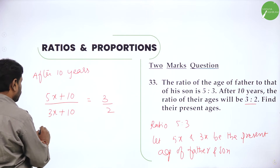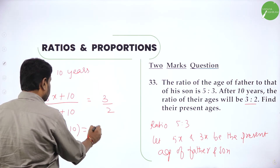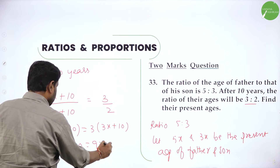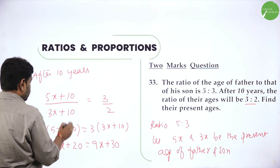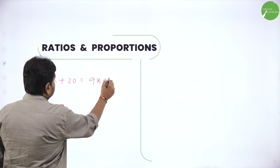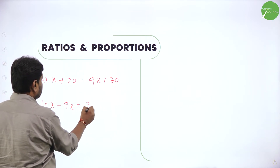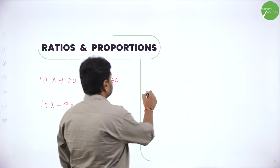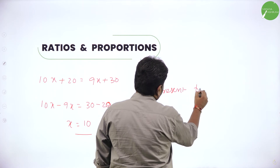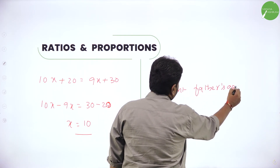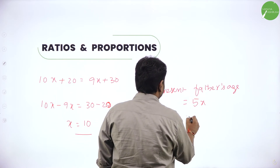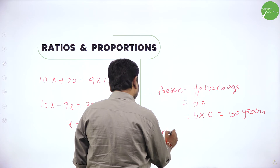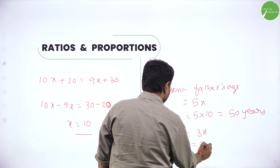So after 10 years, father's age becomes 5x plus 10 and son's age becomes 3x plus 10. Ratio means divided by — so after 10 years the ratio becomes 3 is to 2, meaning (5x+10)/(3x+10) = 3/2. Cross multiply: 2 into 5x plus 10 equals 3 into 3x plus 10. That is 10x plus 20 equals 9x plus 30. Rearranging: 10x minus 9x equals 30 minus 20, so x equals 10.